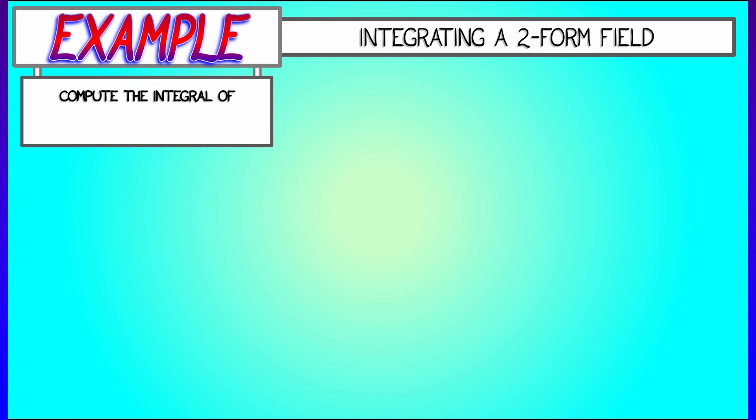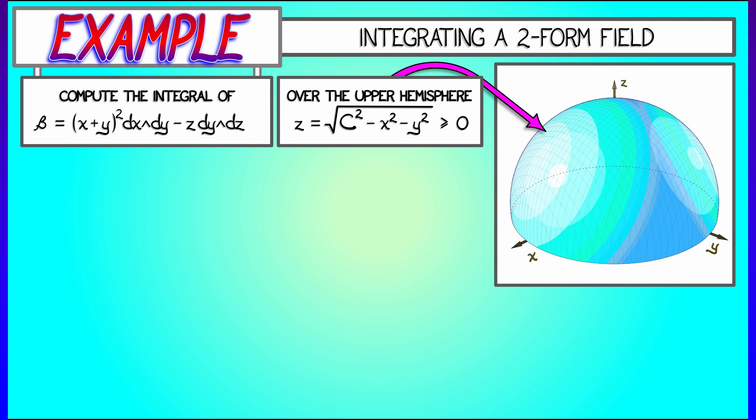Here's an example where that will come up. Consider the integral of the two-form field beta, given by quantity x plus y squared dx wedge dy minus z dy wedge dz. We're going to integrate that over the upper hemisphere in 3D, given by the graph z equals square root of c squared minus x squared minus y squared. We're going to take the non-negative values of z, and c is going to be some constant.